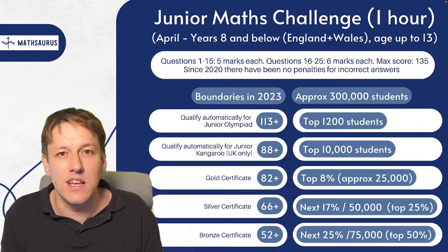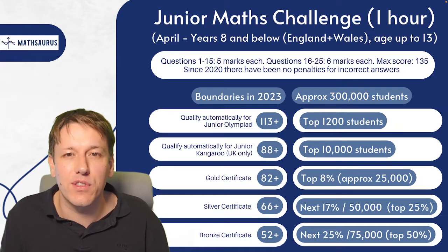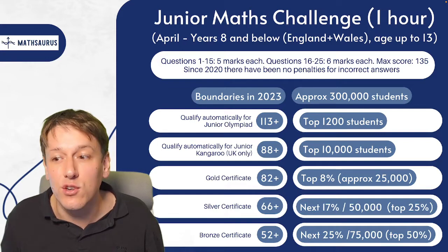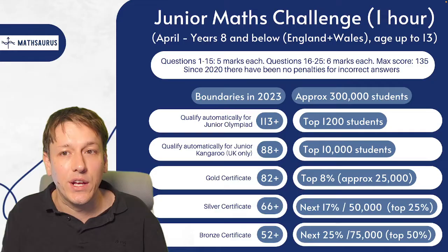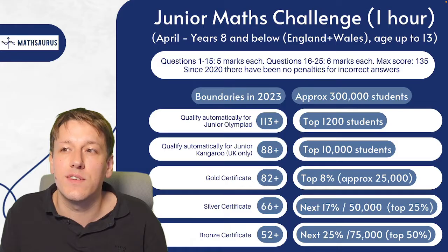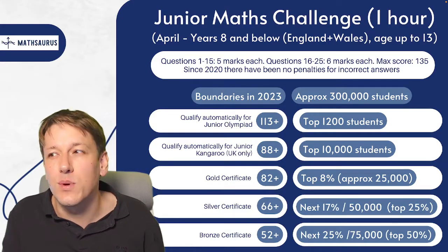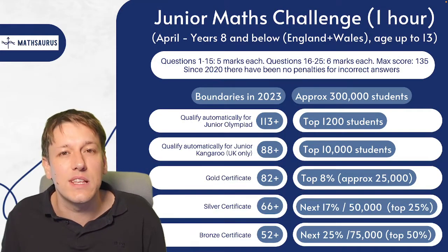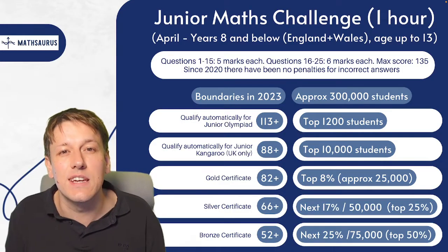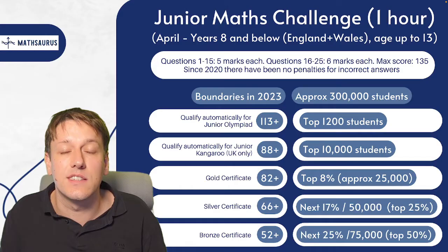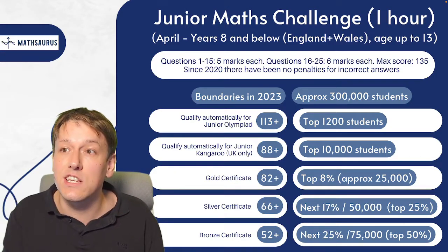The Junior Maths Challenge is the biggest of all the Maths Challenges with over 300,000 students taking it each year. Every student who takes part will get either a certificate of participation or a bronze, silver or gold certificate if they meet the required threshold. It's a multiple choice paper with 25 questions and five options. Questions 1 to 15 are worth five marks each and questions 16 to 25 are worth six marks each, giving a maximum possible score of 135. Since 2020 there have been no penalties for incorrect answers, so students can feel free to guess any questions they haven't got right.